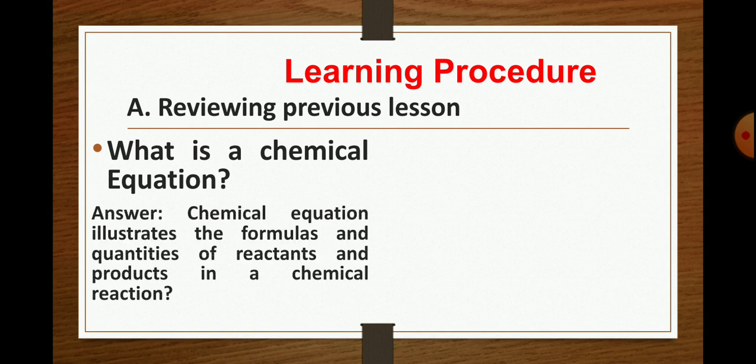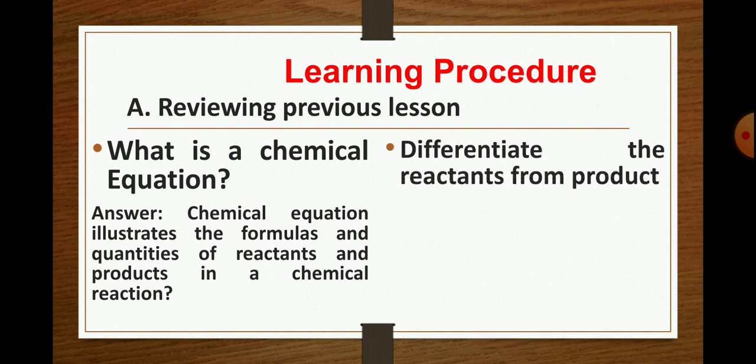Yes Angelo, that is a correct answer. Chemical equation illustrates the formulas and quantities of reactants and products in a chemical reaction. In other words, in chemistry, this is the language of chemistry wherein they use the symbols or the chemical formulas of the substance, what would be happening in internally of the atoms and molecules upon reactions and what would be the possible outcome or product.